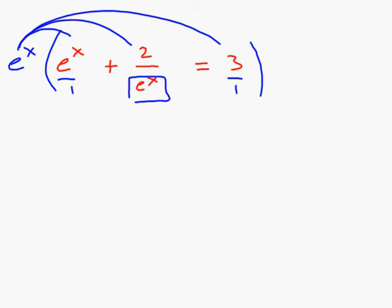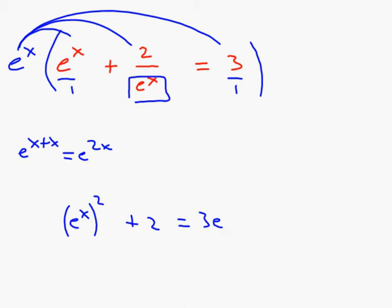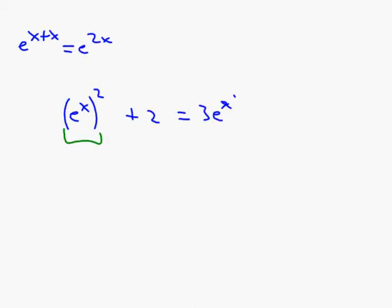You have options for how you write these things. E to the x times e to the x can be written as e to the 2x, or you can think of it as something times itself, which is (e to the x) squared. Over here I get plus 2, and on the right I get equals 3 e to the x. Rearranging: (e to the x) squared minus 3 times e to the x plus 2 equals 0.